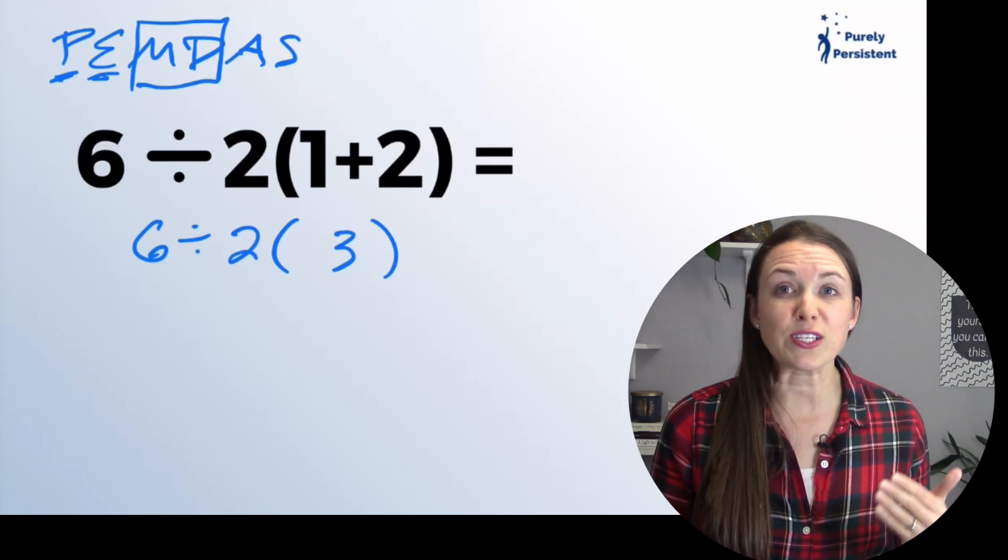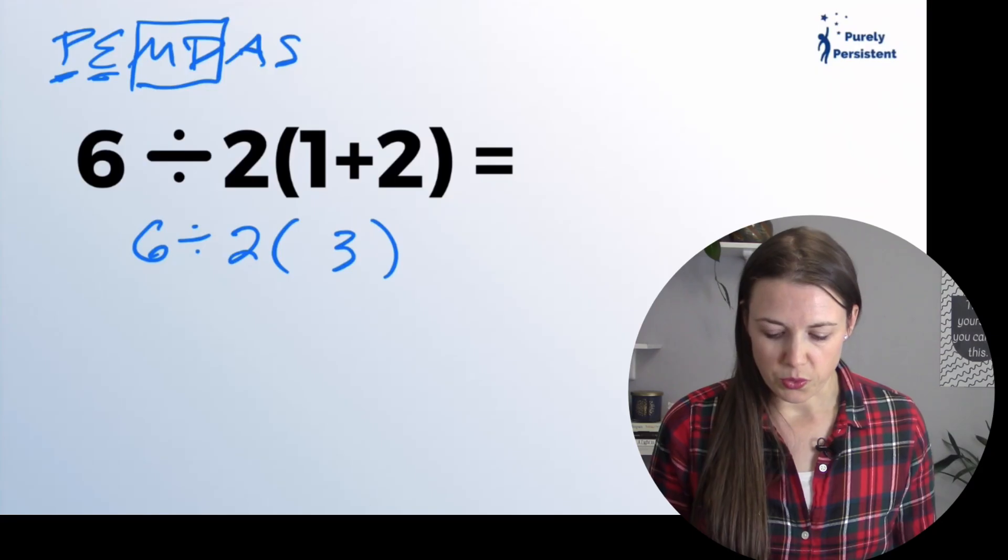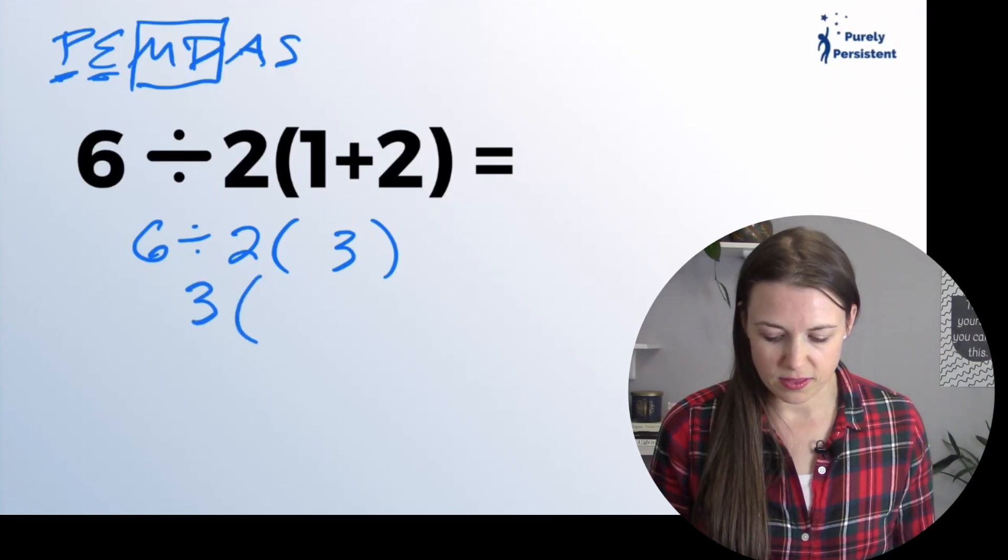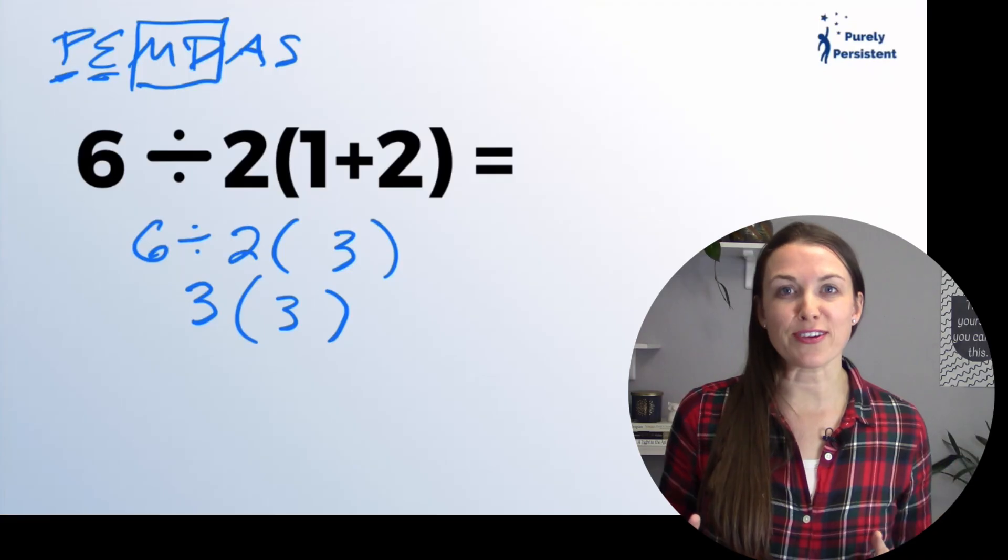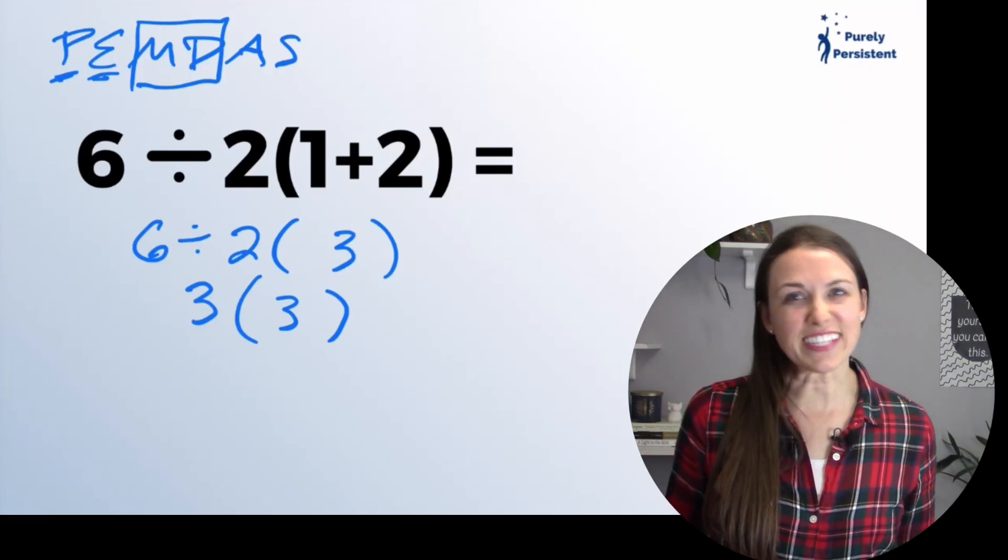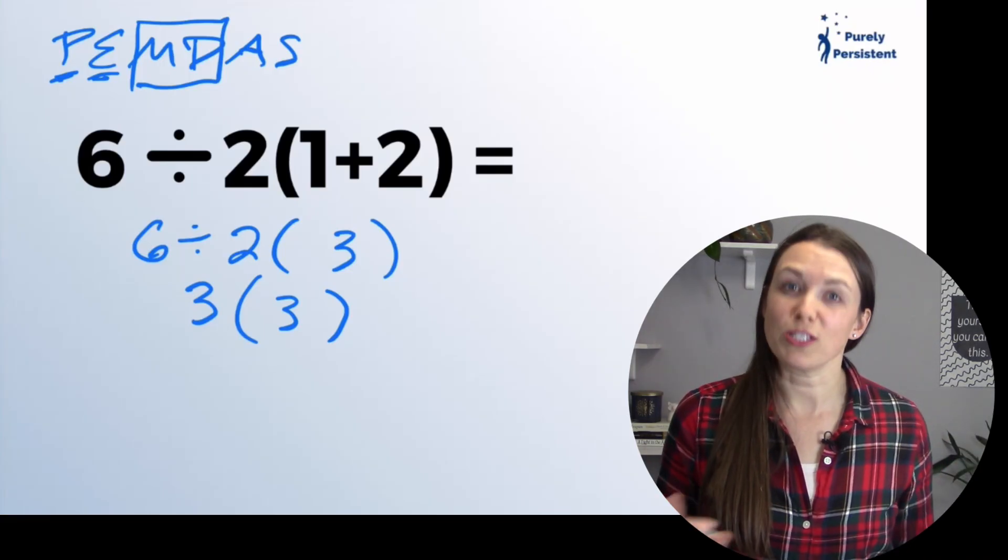So I'm going to go 6 divided by 2, which is 3. Anytime we have a number next to another number that's in parentheses, that's just a way of saying we're multiplying.